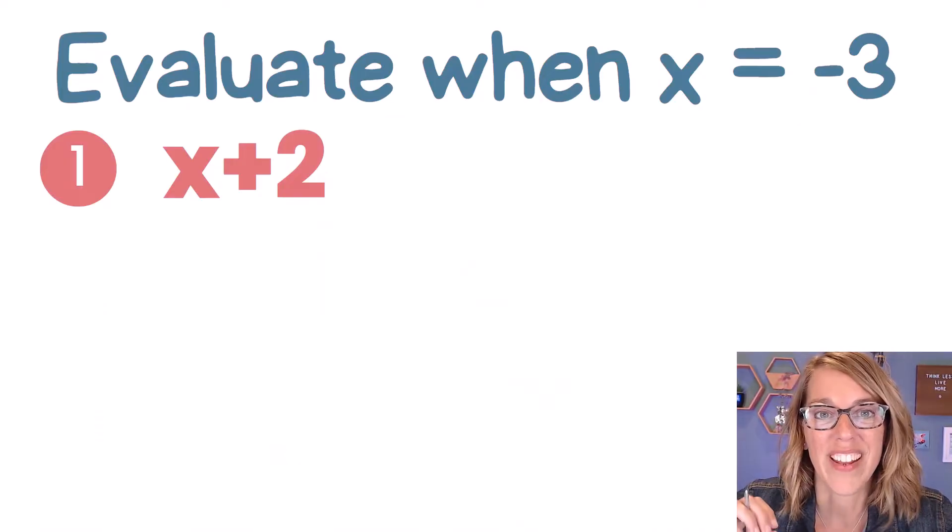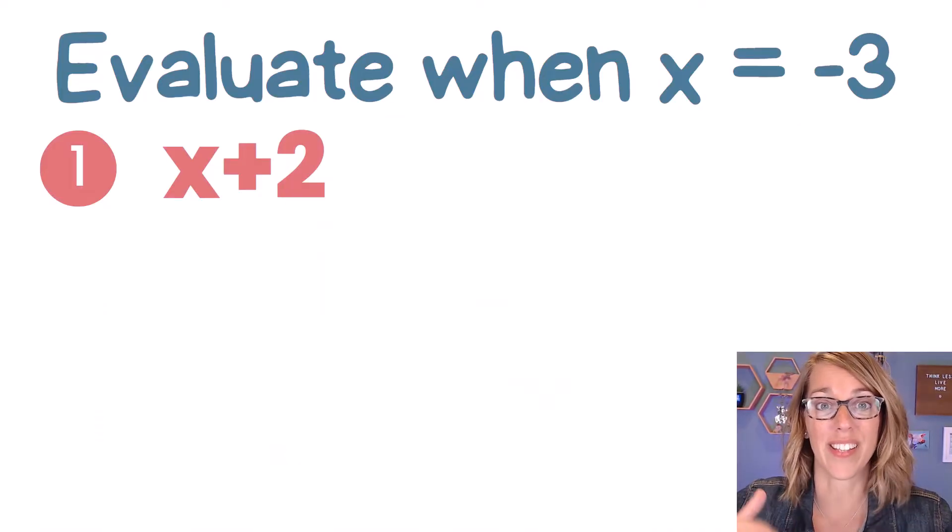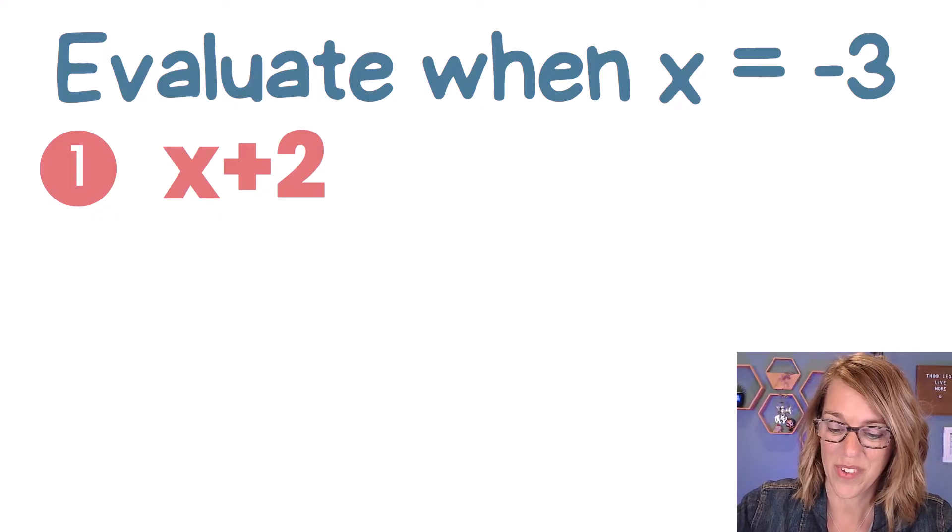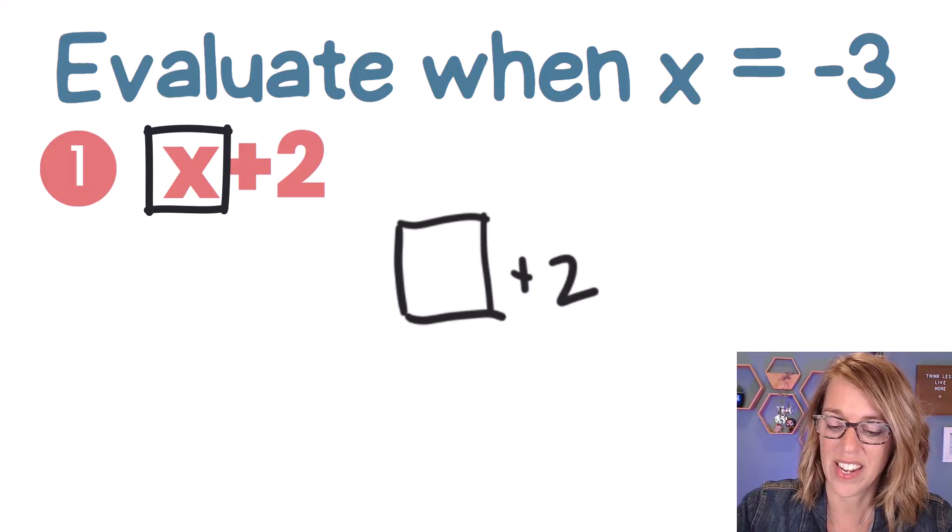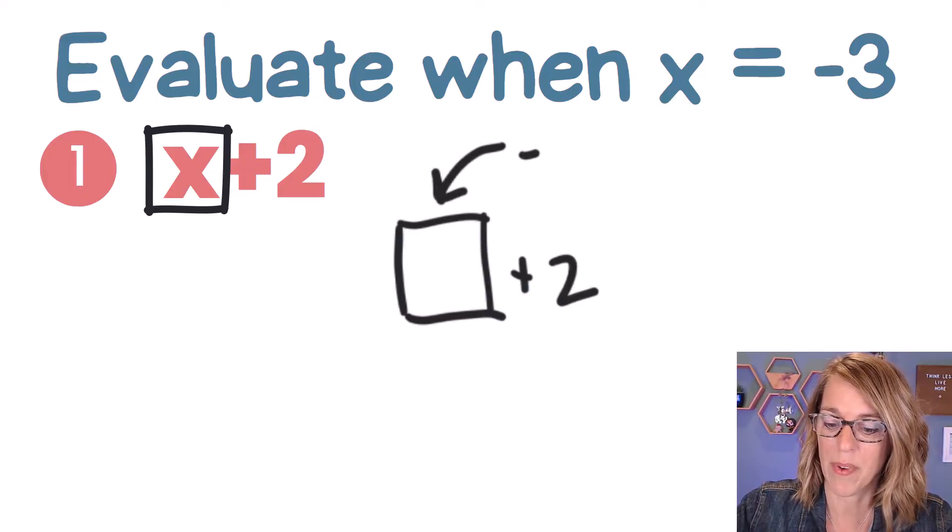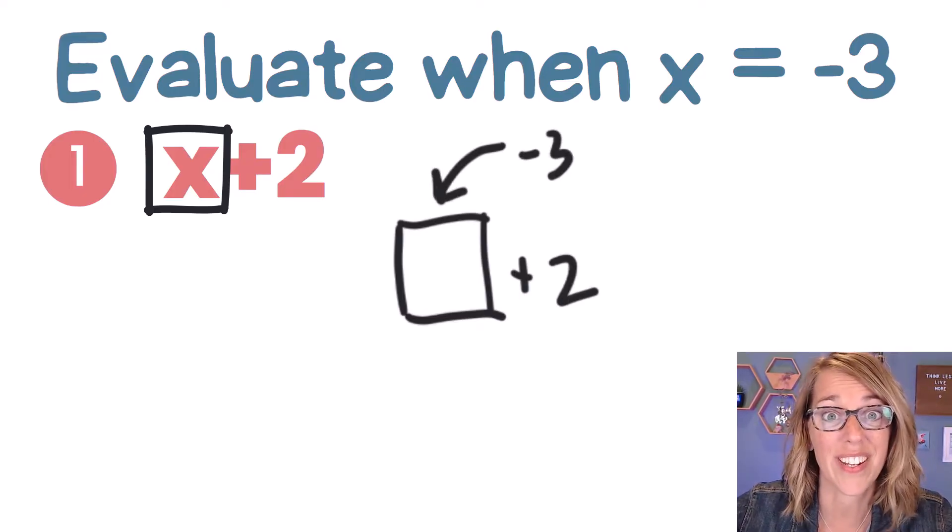In this first example, I've got x plus 2. That means that I've got some value plus 2. So I'm going to write that x plus 2 instead as an empty box plus 2, and I know that I want to put in this empty box my value for x, which is a negative 3.